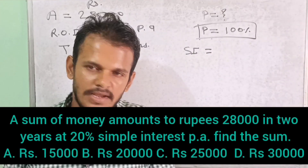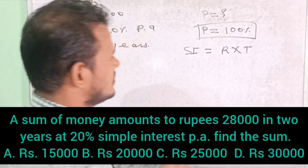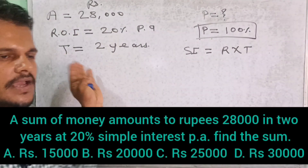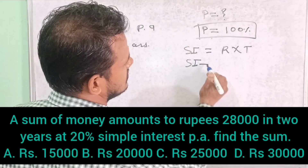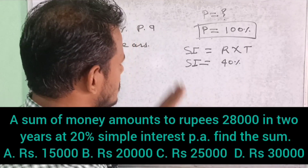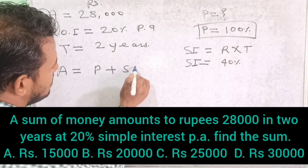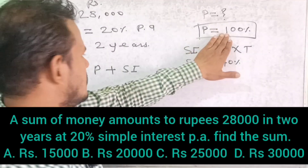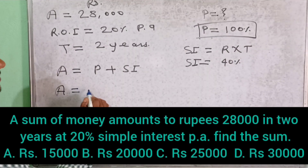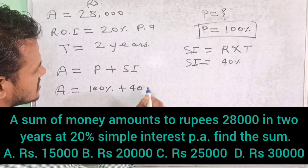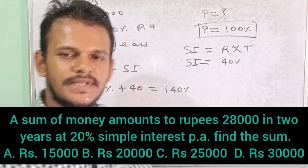One formula is PRT by 100, and another approach is: Simple Interest = Rate into Time divided by 10. The rate of interest is 20% and the time is 2 years. So total simple interest is 20 into 2 = 40%. Amount equals 100% plus 40%, so the total amount is 140%.